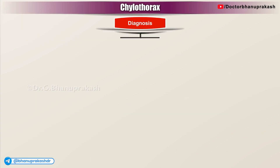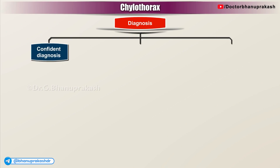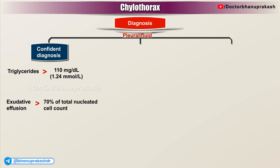Diagnosis: Most authors agree that a clinically confident diagnosis of chylothorax can be made by demonstrating a pleural fluid triglyceride concentration of more than 110 mg per deciliter or 1.24 mmol per liter, in the correct clinical context — that is, a patient who has an exudative effusion with a predominance of lymphocytes (more than 70% of the total nucleated cell count) on a regular or high-fat diet with a known risk factor.